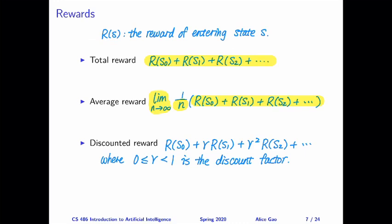So there are some problems with the first two approaches. What's the problem with using total reward? The problem here is relatively easy to see. If we have an unlimited number of time steps, then this sum of all the reward is likely to be infinite.